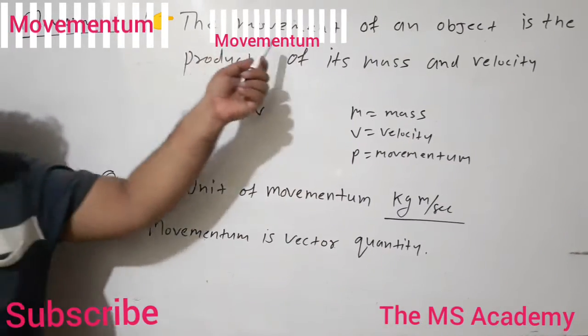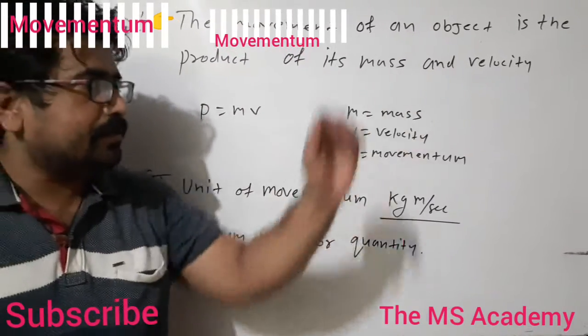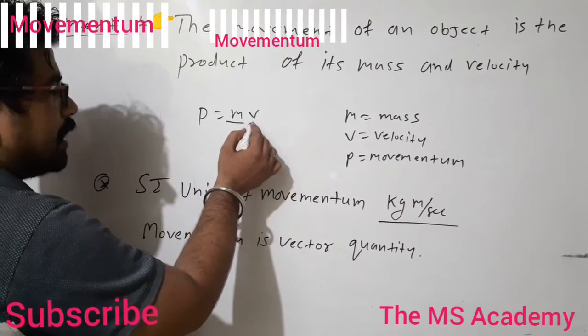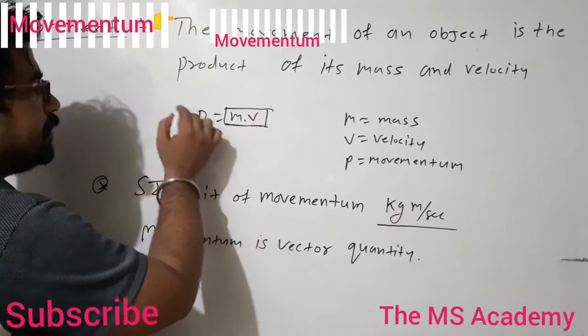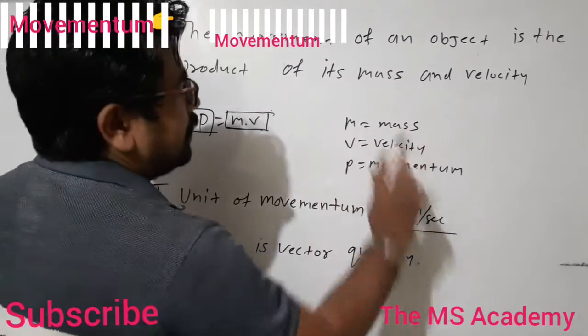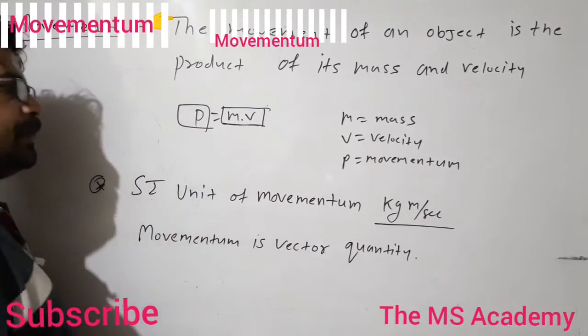Momentum. The momentum of an object is the product of its mass and velocity. In the formula P = mv, m is the mass of the object, v is the velocity of the object, and P is momentum.